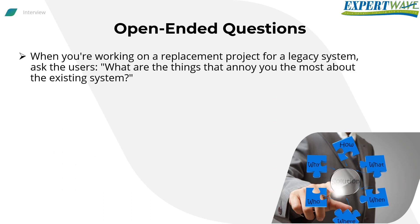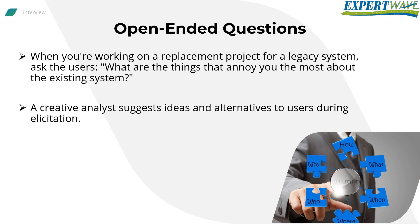When you're working on a replacement project for a legacy system, ask the users: 'What are the things that annoy you the most about the existing system?' This question helps to get to the bottom of why a system is being replaced and surfaces expectations that the users hold for the follow-on system. The idea here is not just to write down what customers say, but a creative analyst suggests ideas and alternatives to users during elicitation. Sometimes users don't realize the system's capabilities and get excited when you suggest functionality that will make the system more useful.